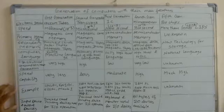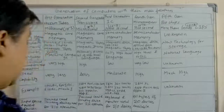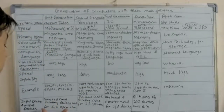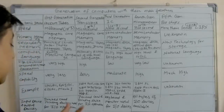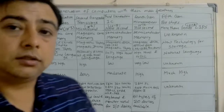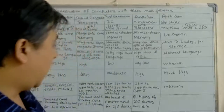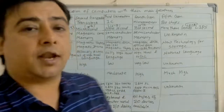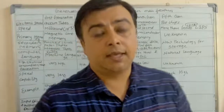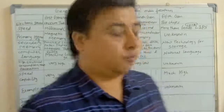For input and output devices: in the first generation, punch cards and printing devices were used for input and output operations. In the second generation, punch cards and printing devices were also used. In the third generation, the keyboard was introduced as an input device and the monitor was used as the output device. In the fourth generation, we use different input and output devices like speakers, monitors as soft-copy output, and printers and plotters as hard-copy output devices.